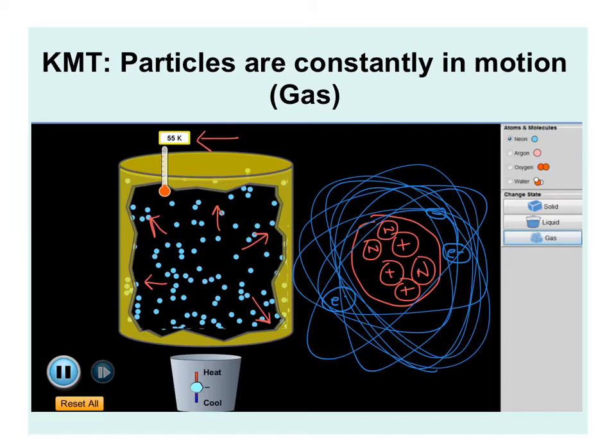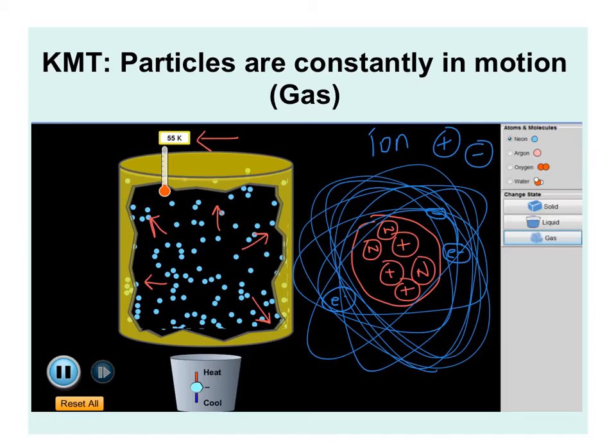If certain materials lose an electron easily, it makes them more stable, and we call those an ion. If something gains or loses an electron, it's no longer neutral — it would have either a positive or negative overall charge. It's important to understand the parts of the atom and that electrons can be lost easily, giving something a charge. That's why, for example, if you go down a plastic slide or rub your feet on the floor wearing wool socks, your hair might stand up or you get a little shock.